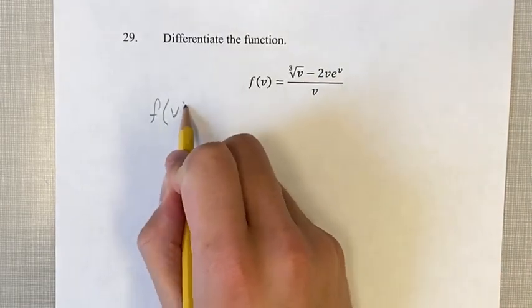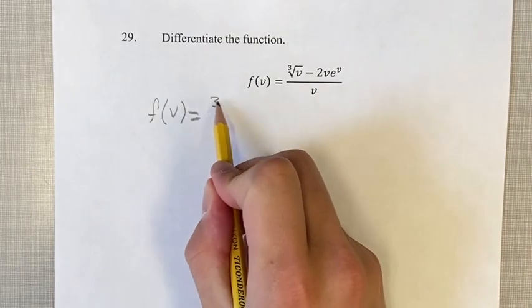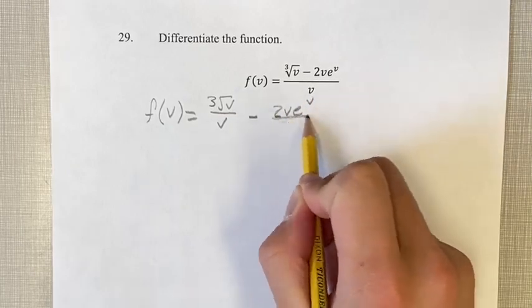So our first step, before we find the derivative, is we want to separate this into two separate fractions. So we have cube root of v over v minus 2v e to the v over v.